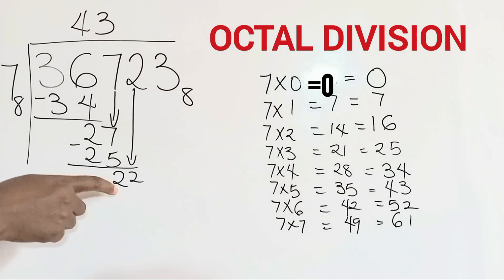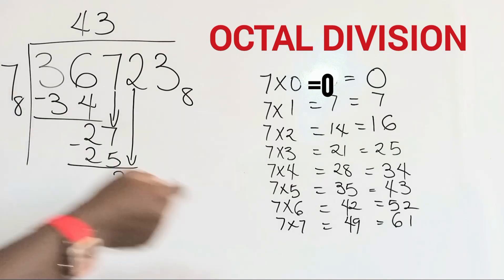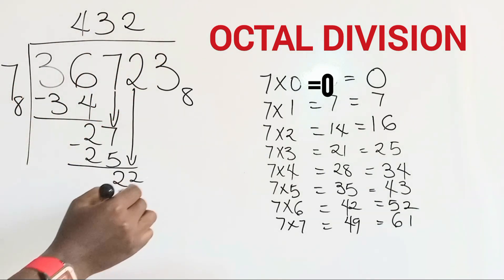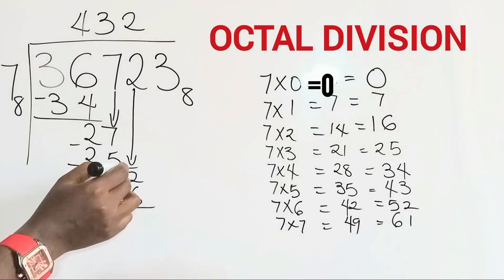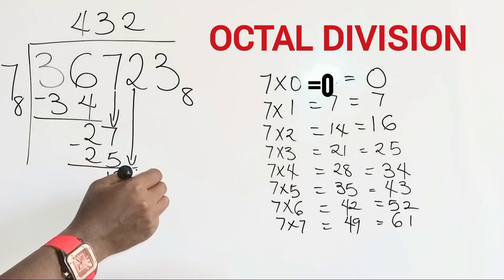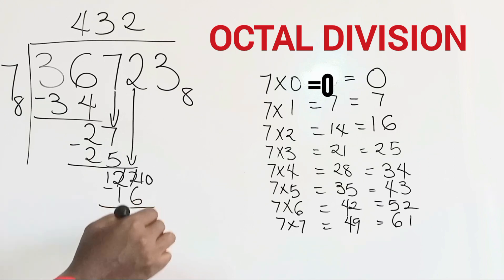Now we are going to divide 22 by 7. If we check, we do not have 22, but we have 16, and that's 7 times 2. So we have 2 here. 2 times 7 will give us 16. We subtract. Now 2 minus 6 is not possible, so we have to borrow. We borrow from the next digit. Here now becomes 1. Remember, we are dealing in base 8, so we are going to be borrowing in 8. So the 1 that is borrowed from here will become 8. We add 8 to 2, and that gives us 10. So 10 minus 6 becomes 4. Then we bring in our next digit, which is 3.